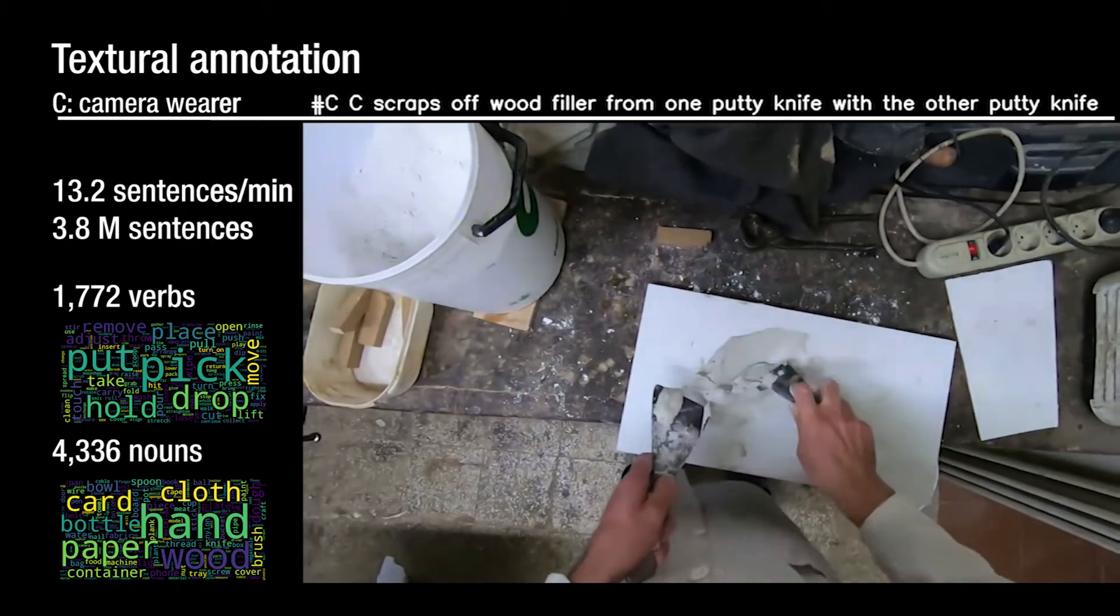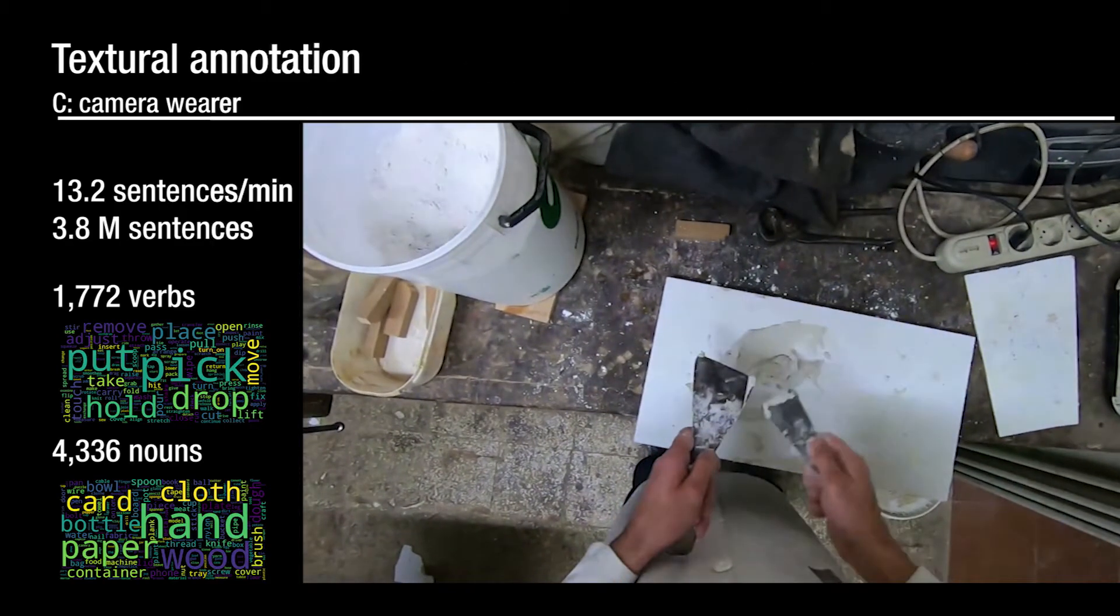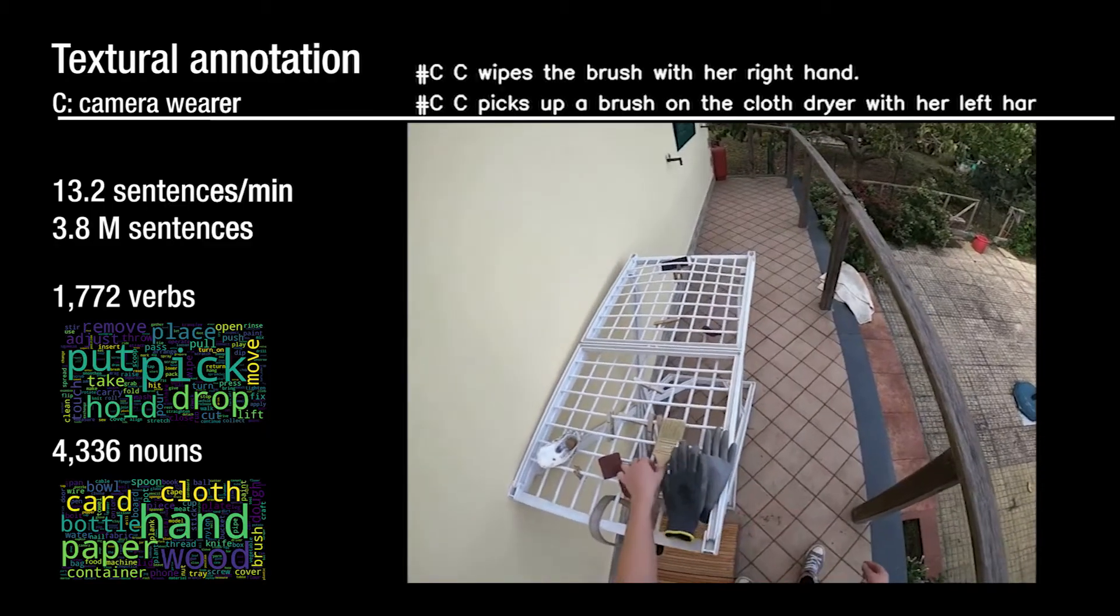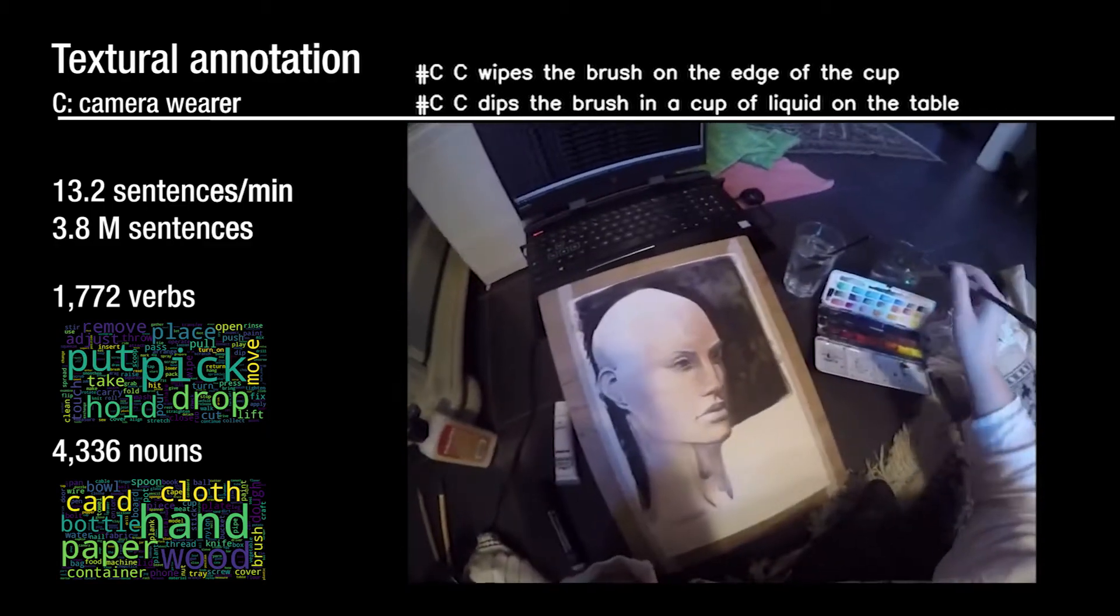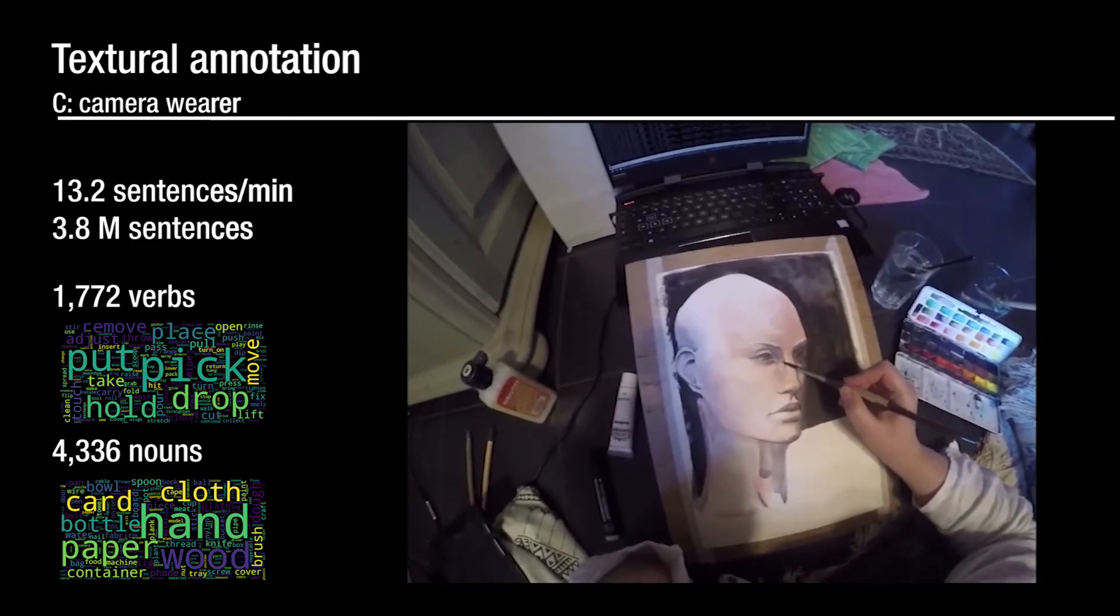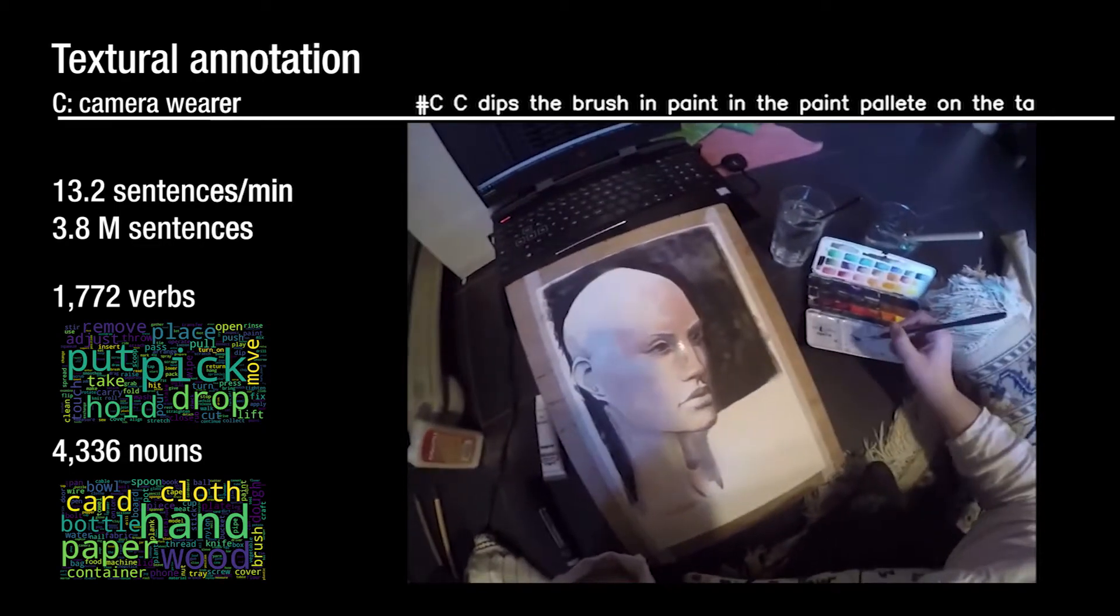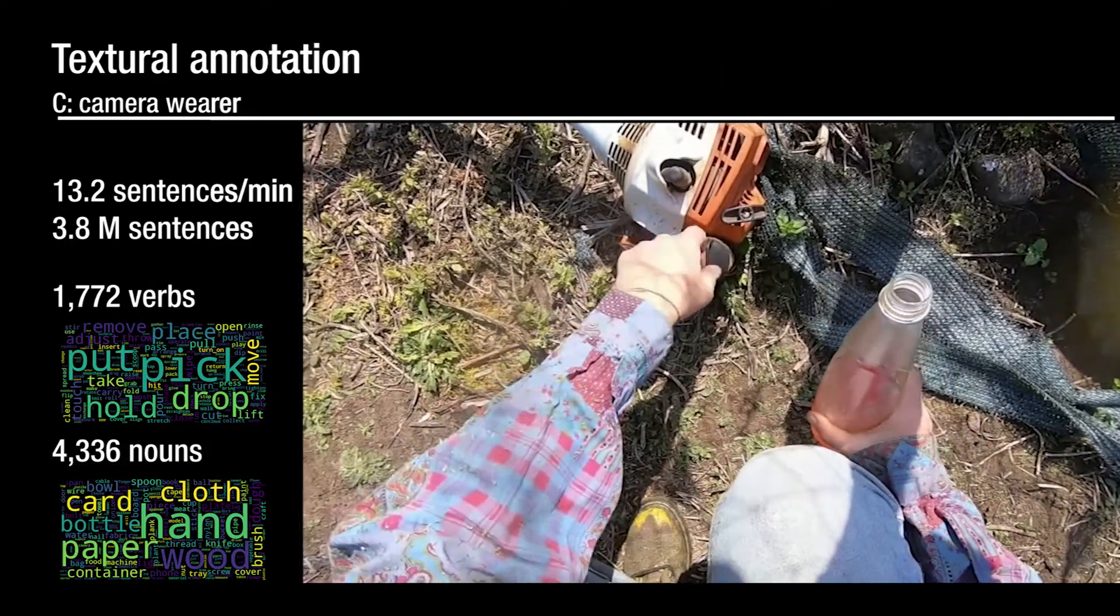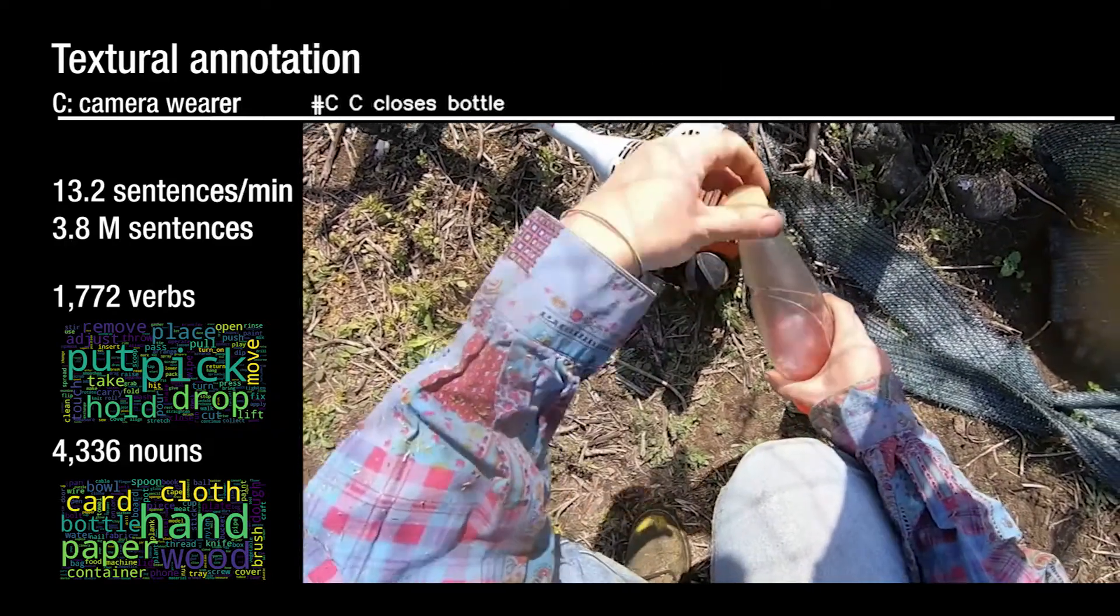Activity in each video is narrated nearly every 4 seconds, totaling 3.8 million sentences that include 1,700 verbs and 4,300 nouns. This narration describes detailed interactions, for instance, hand-object interactions which facilitate language grounding.